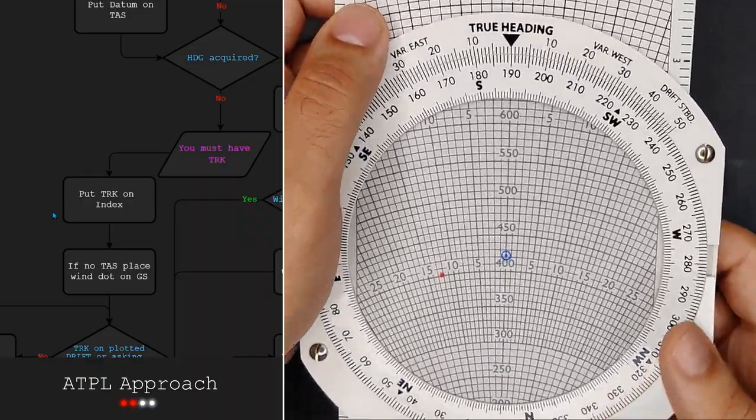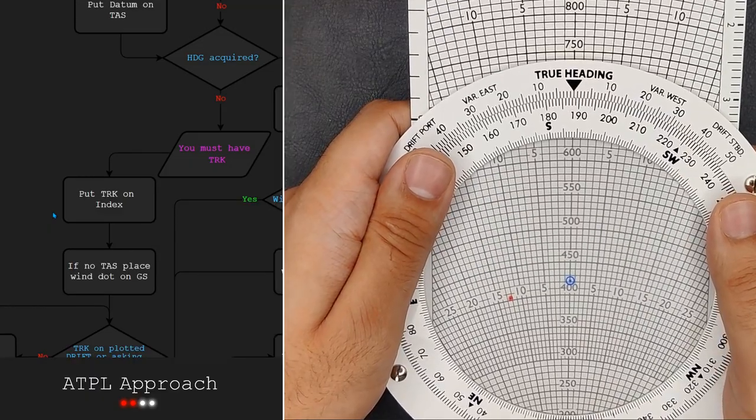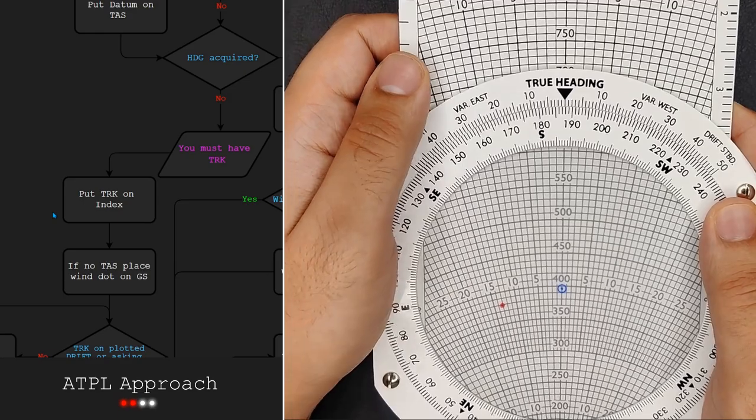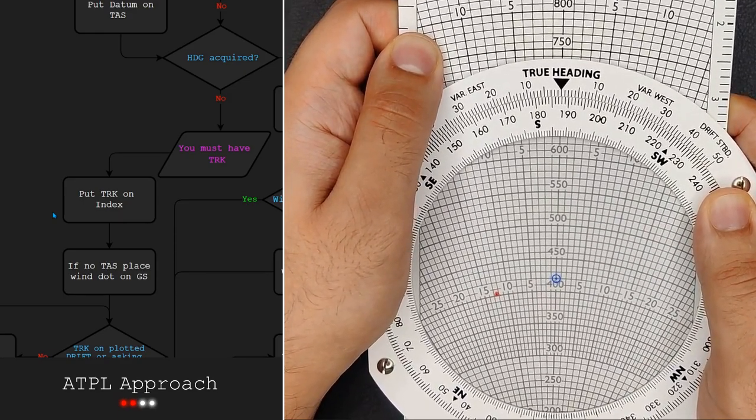All right, seeing if I can put it back in here and it's nice and lined up. Now, the 188 under the true heading. There we go. And the datum on the 420.